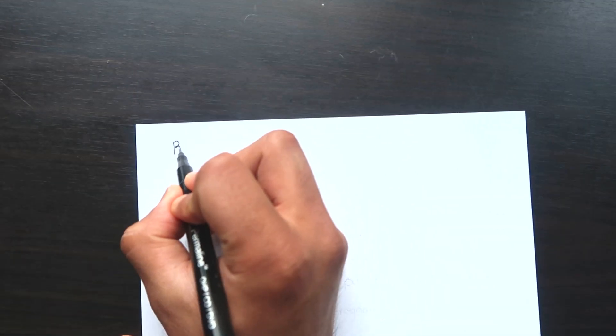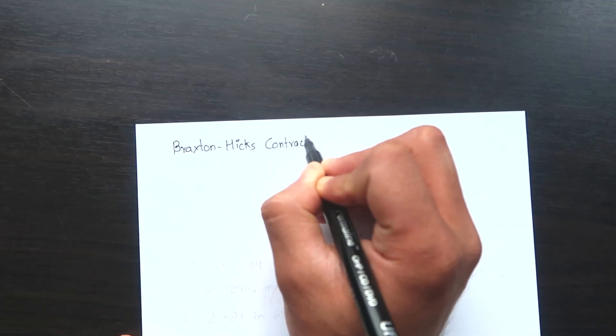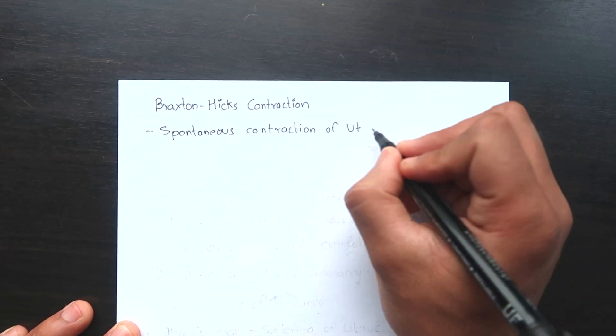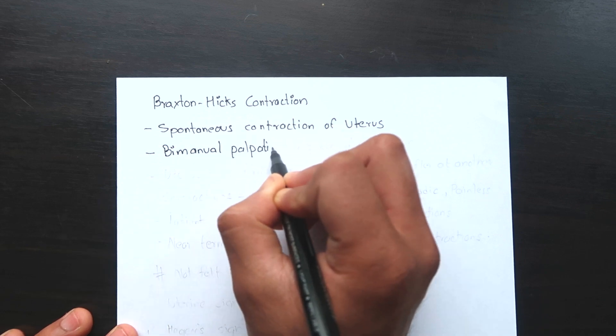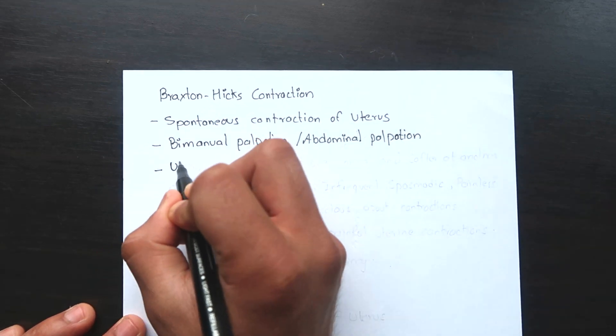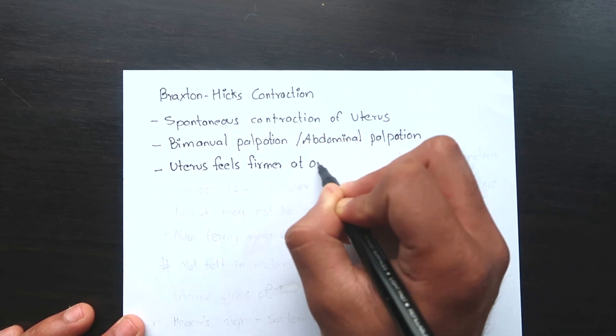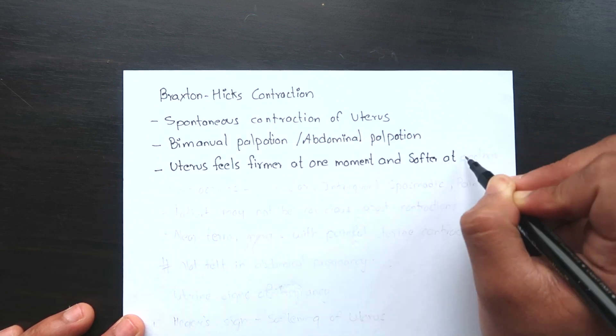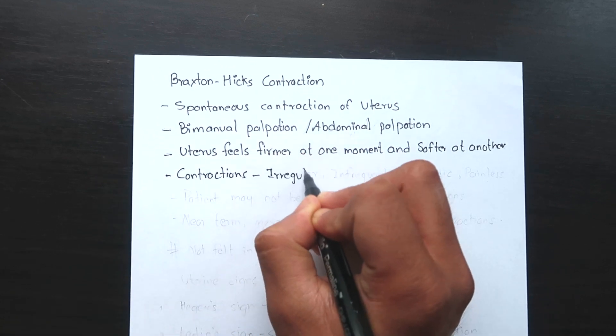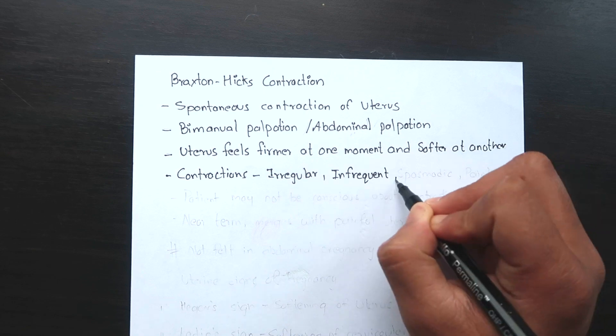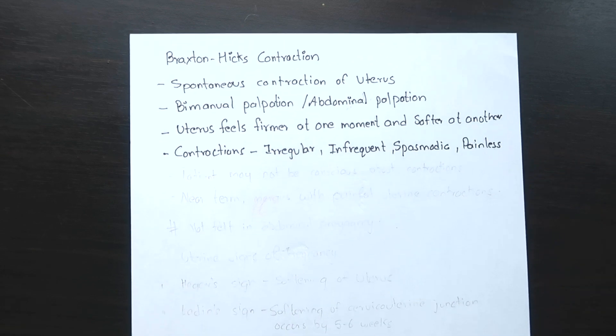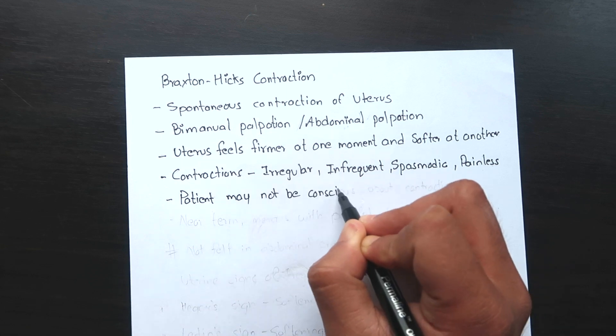From the very early weeks of pregnancy, the uterus undergoes spontaneous contraction called Braxton Hicks contraction. This can be felt during bimanual palpation in early weeks or during abdominal palpation when the uterus feels firmer at one moment and softer at another. Although spontaneous, the contractions are irregular, infrequent, spasmodic and painless. The patient may not be conscious about the contractions.